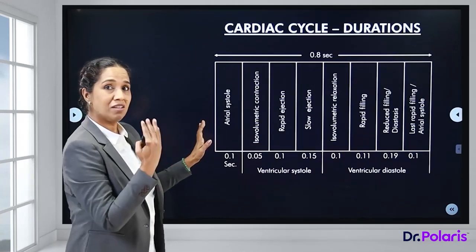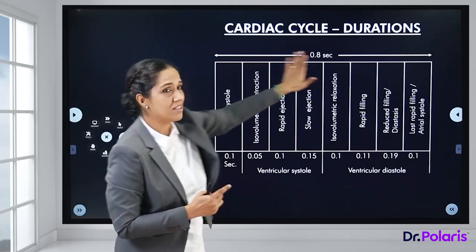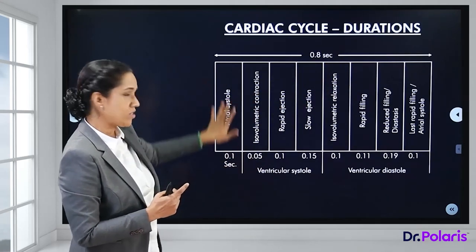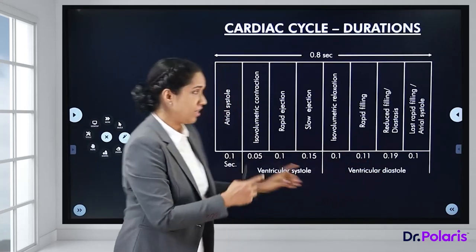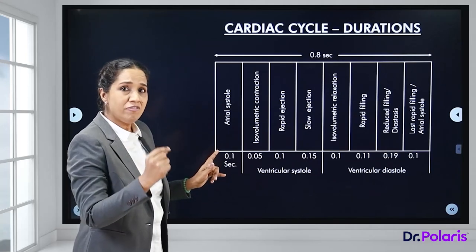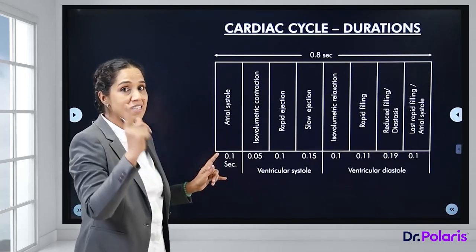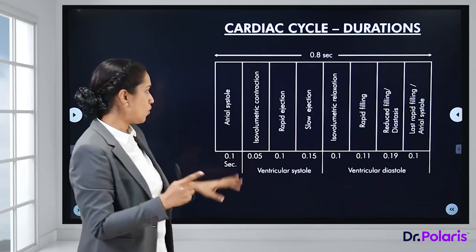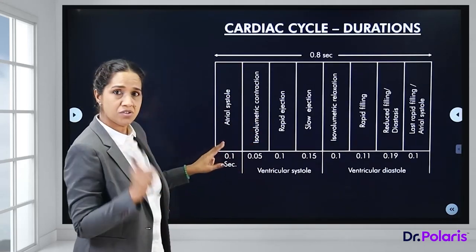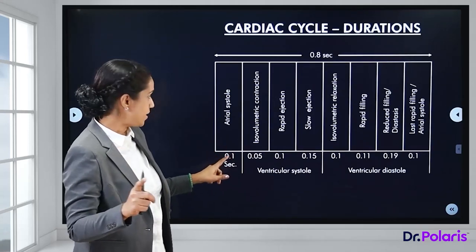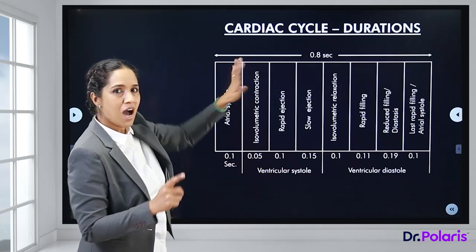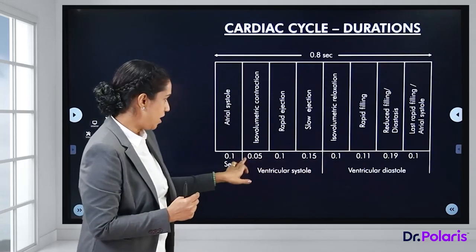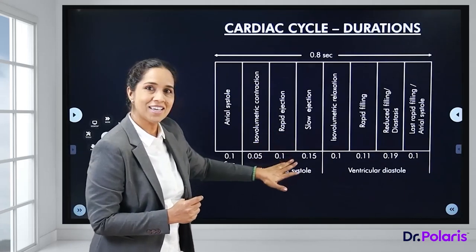The different phases with their time durations: the total cardiac cycle is 0.8 seconds, divided into atrial systole, ventricular systole, and ventricular diastole. Ventricular systole is further divided into the isovolumetric contraction phase (0.05 s), rapid ejection phase (0.1 s), and slow ejection phase (0.15 s).